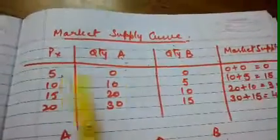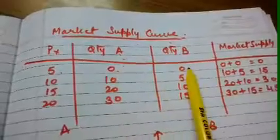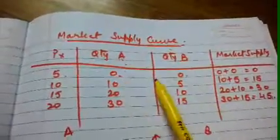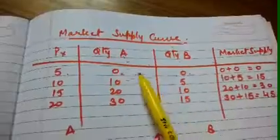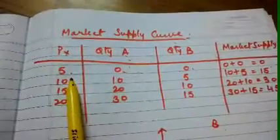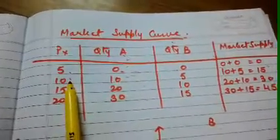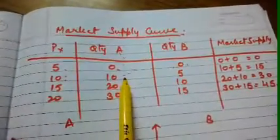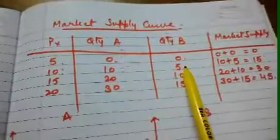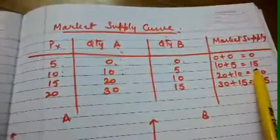When the price was rupees 5, quantity supplied by Firm A is 0 and Firm B is 0. When we add both quantities of A and B, we get the market supply. When the price rises to rupees 10, Firm A is supplying 10 units and Firm B is supplying 5 units, and when we add them we get 15. In a similar way, we are adding the supply of both firms to make the market supply schedule.